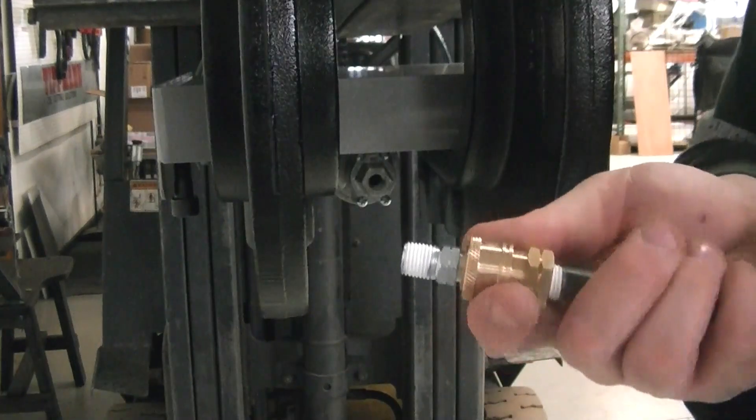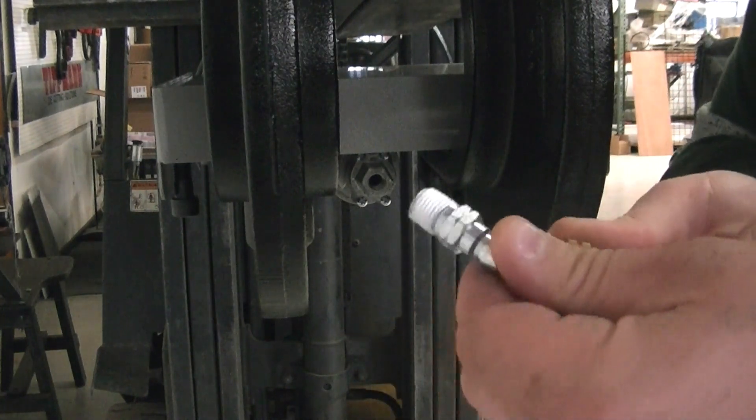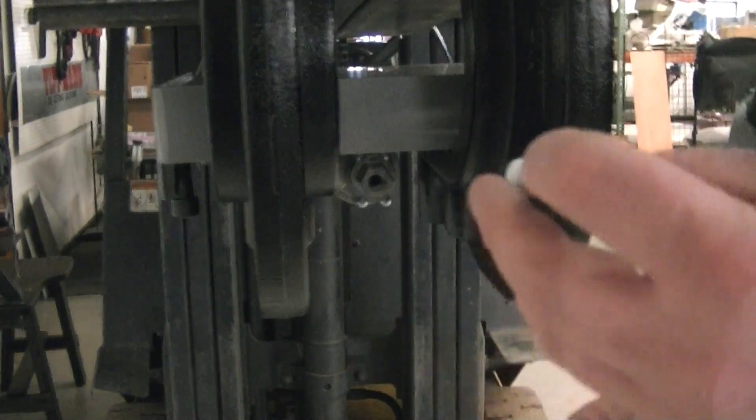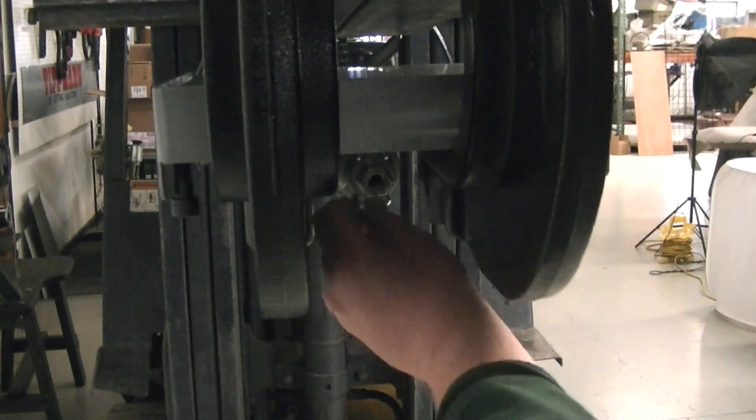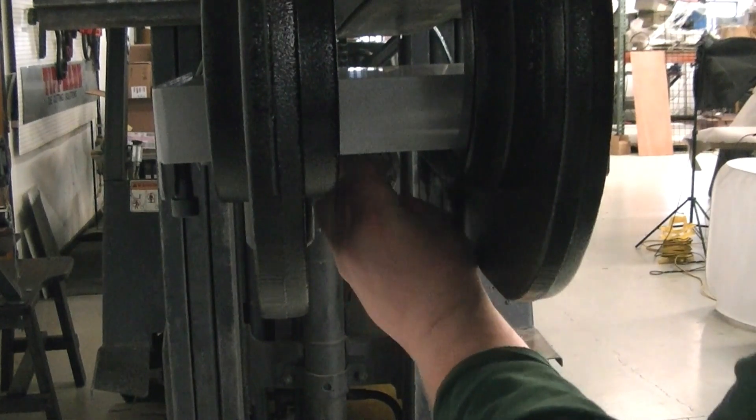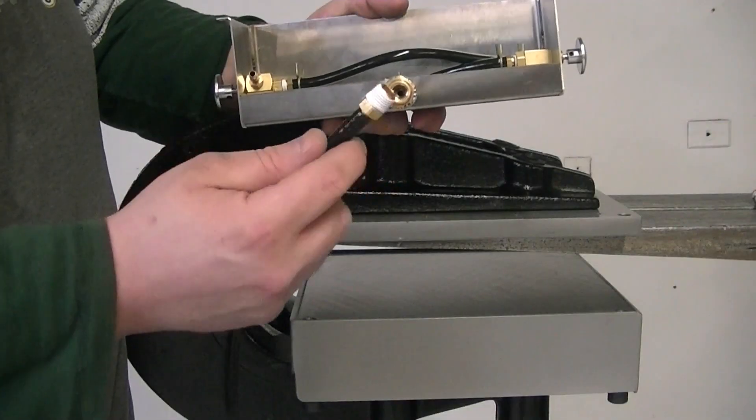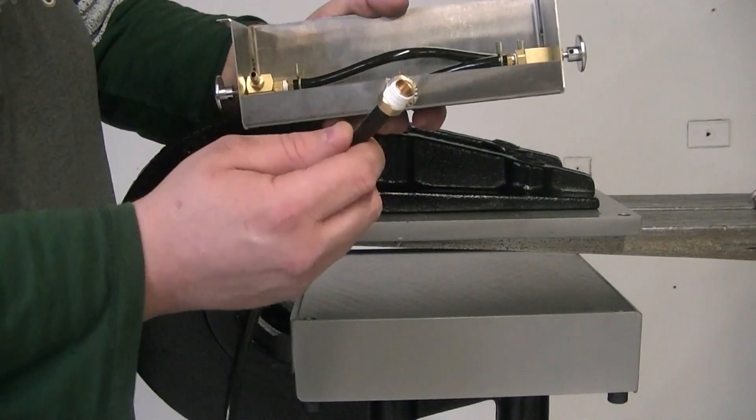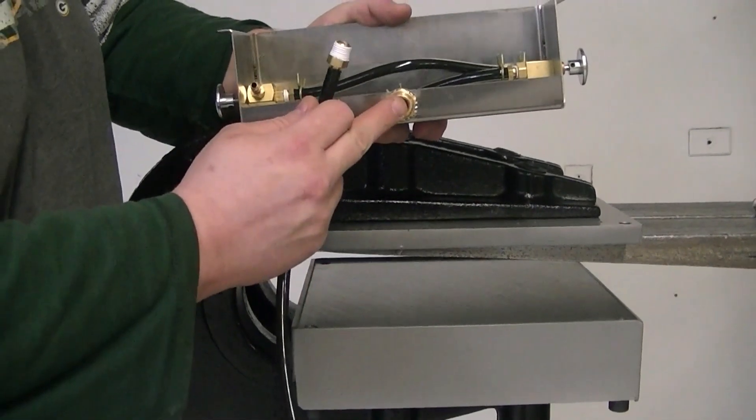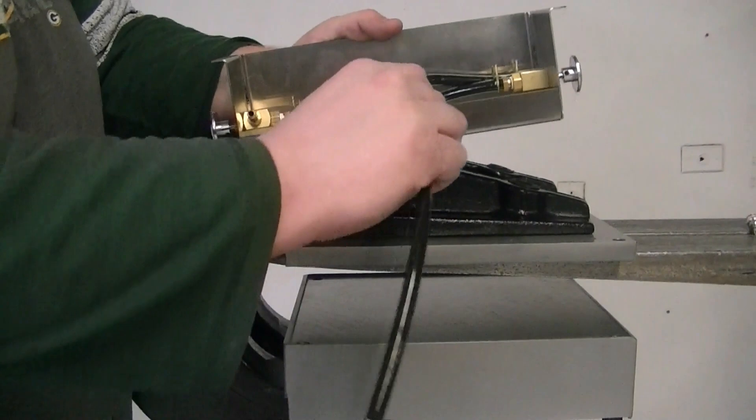Next, take your new quick connect that comes with your accumulator system and screw it to where the barb fitting was on the quick exhaust under the machine. After you re-teflon tape that barb fitting that was underneath the machine, screw that to the back of your control box.